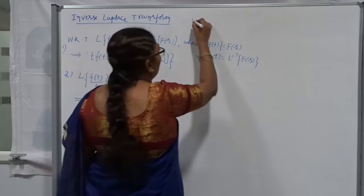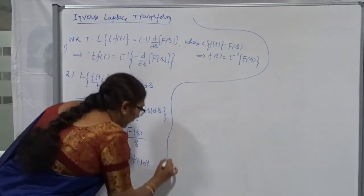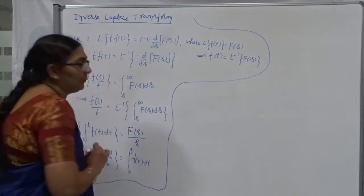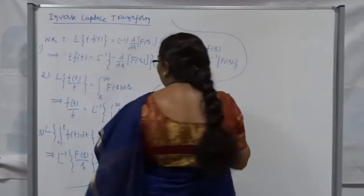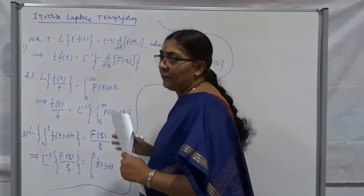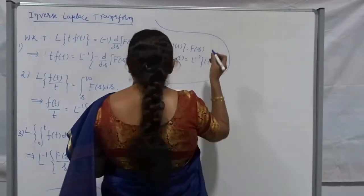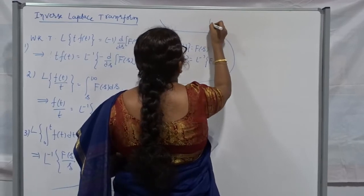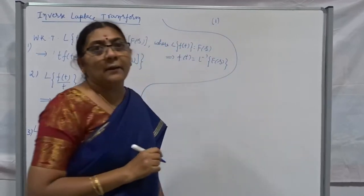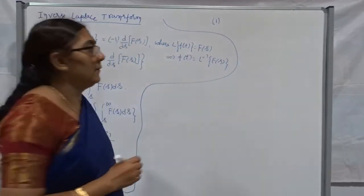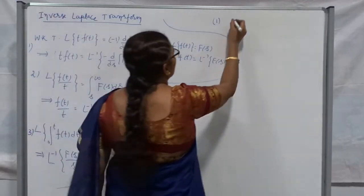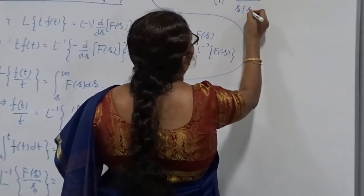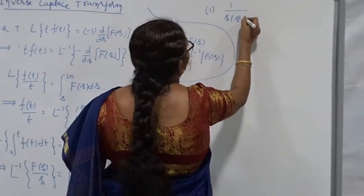I think everyone is clear. Even if it's not clear while forming a problem, there will definitely be a problem that clarifies it. Keep in mind: in all the problems we are finding the inverse Laplace transform. The first function is 1 divided by s times (s² + a²). I want to find out the inverse Laplace transform of this.